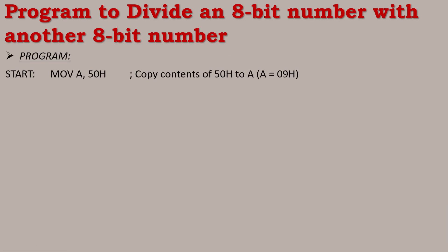The first instruction is MOV A, 50H. The value at 50H is 09H, so 09H is copied to register A. The next instruction is MOV B, 51H. The value at 51H in RAM is 04H, so 04H is copied to register B.